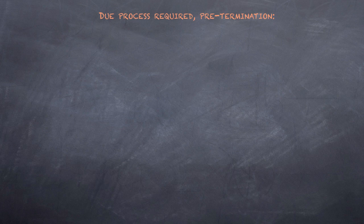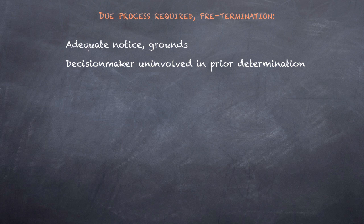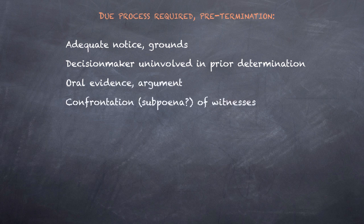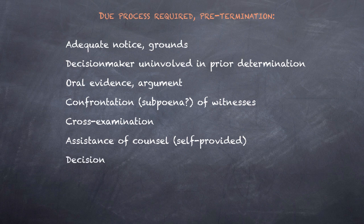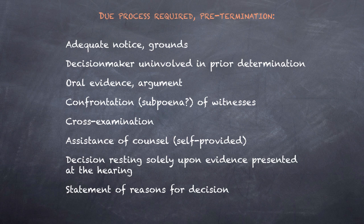What kind of hearing? We gather from the Goldberg opinion that due process required the following procedural elements at an AFDC pre-termination hearing: adequate notice and grounds for termination; a decision-maker uninvolved in a prior determination of ineligibility; oral evidence and argument; confrontation and perhaps subpoena of witnesses; cross-examination; assistance of counsel, self-provided; a decision resting solely upon evidence presented at the hearing; and a statement of reasons for the decision. Suppose, for example, that the caseworker believed that a dependent child had moved out and was no longer living under the recipient's roof. If this was an honest error or an irritable misjudgment, the procedural tools made available on this list could correct the result.